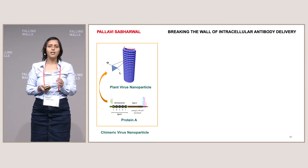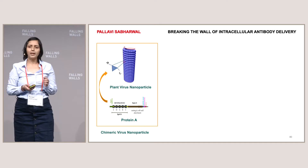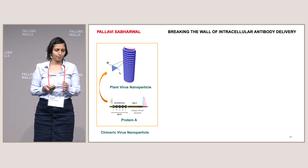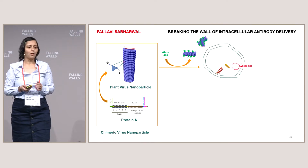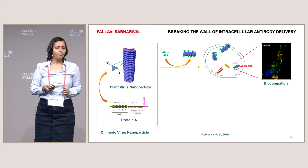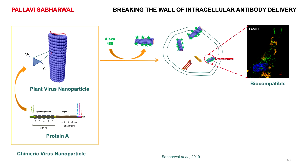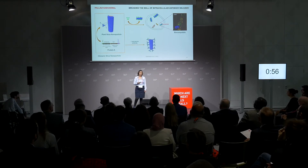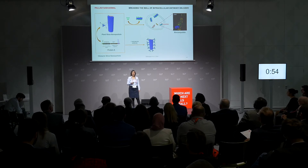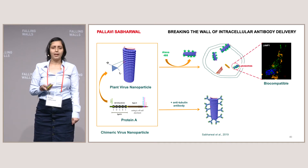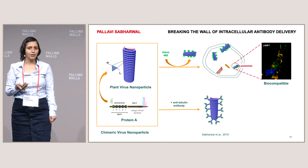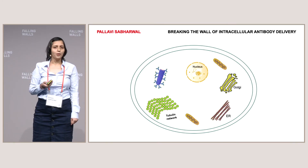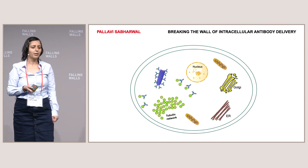We genetically engineered an antibody-binding B domain by cloning it at the end terminus of the protein coat subunit. This nanoparticle we called a chimeric nanoparticle, and we modified it chemically to test whether it can internalize into various cancer cells. We found that they could internalize and were also biodegraded, indicating the biocompatibility of these nanoparticles. To test whether these nanoparticles could be carriers for antibodies, we incubated them with the anti-tubulin antibody. We found that the tubulin antibody could bind to the surface of these nanoparticles and was delivered inside the cells, and the antibodies were functional by disrupting the tubulin network.